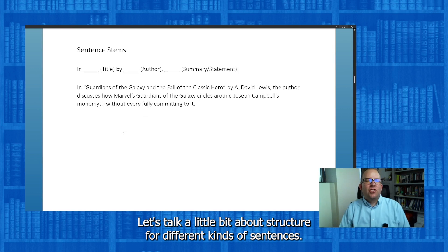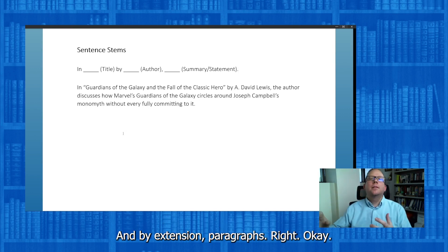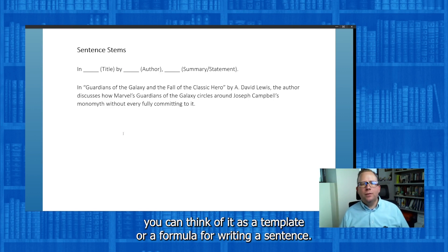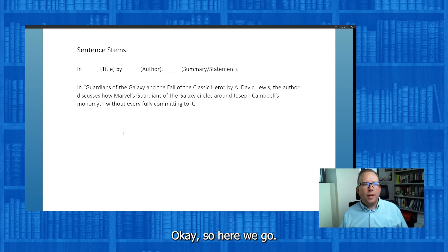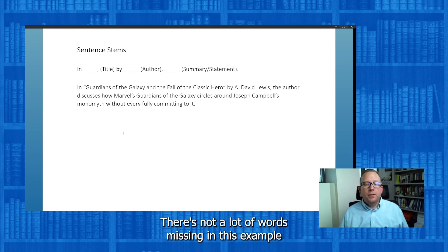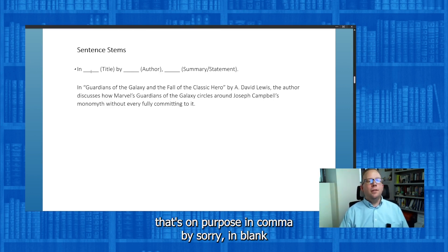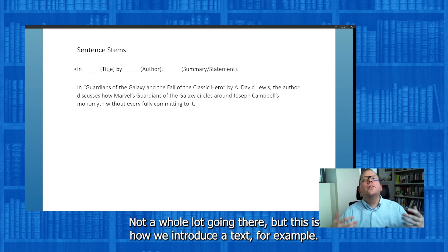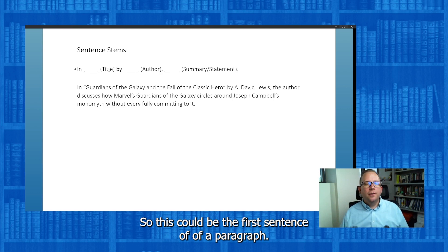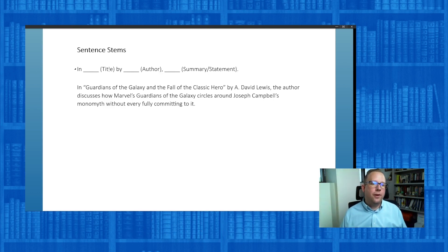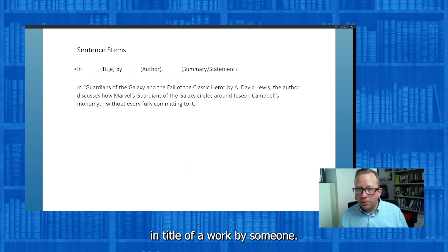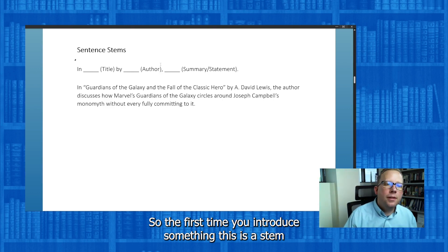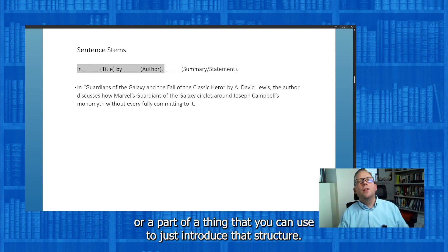Let's talk about structure for different kinds of sentences, and by extension paragraphs. From the teacher side, we might call these stems — a template or formula for writing a sentence. Here's one: 'In [blank], by [blank], [blank].' There's not a lot of words, but this is how we introduce a text. This could be the first sentence of a paragraph or a thesis within a paragraph. In the title of a work by so-and-so, then you make a statement — a claim, a thesis, or a summary of the text.